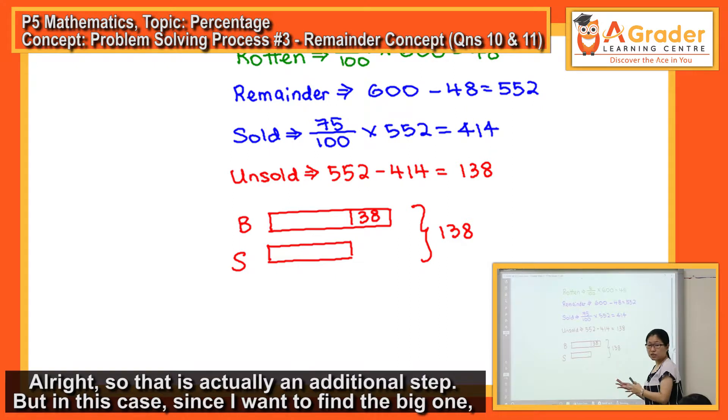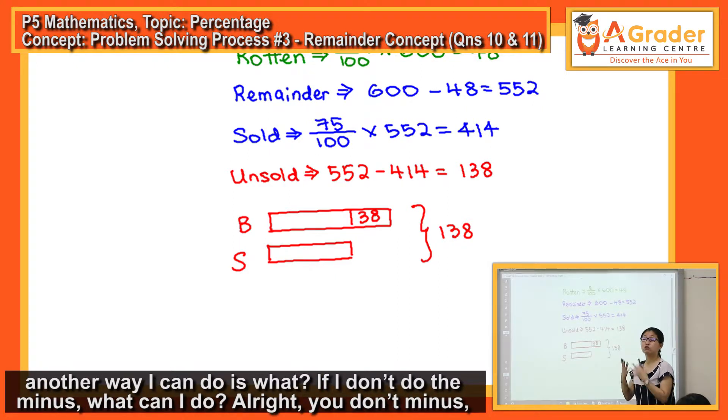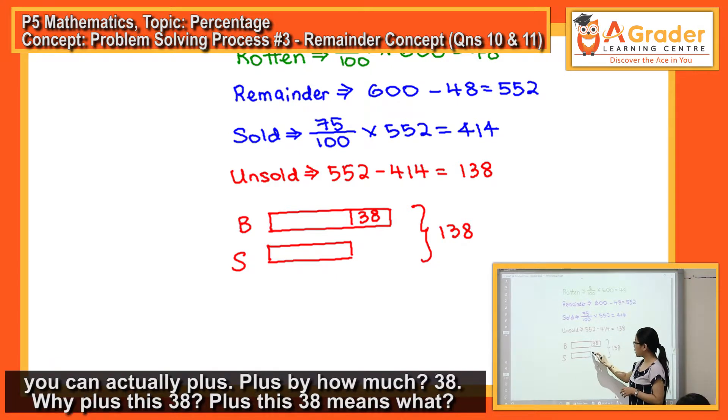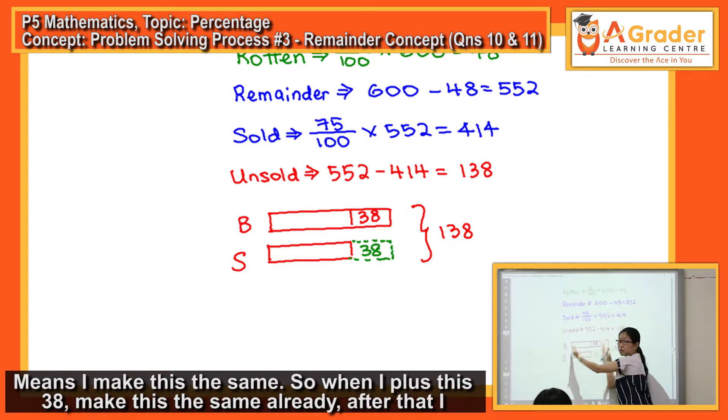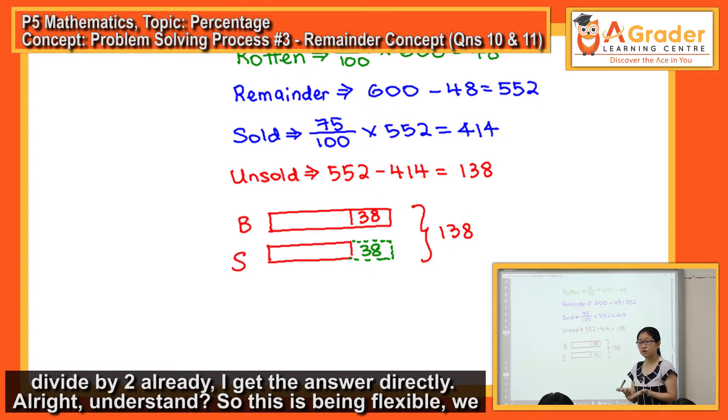But in this case, since I want to find the big one, another way that I can do is: what if I don't do the minus? What can I do? You can actually plus. Plus by how much? 38. Why plus this 38? Plus this 38 means that I make this to be the same. So when I plus the 38, make this the same already, after that I divide by two, I get the answer directly.